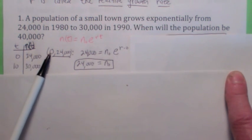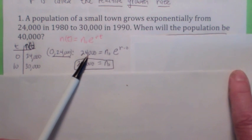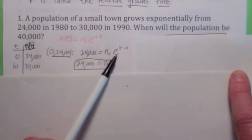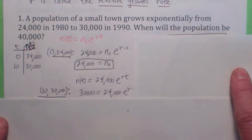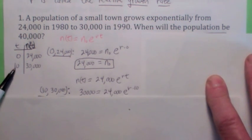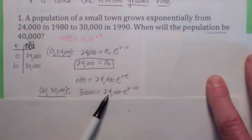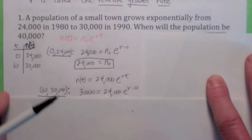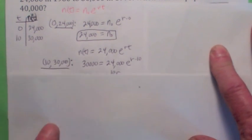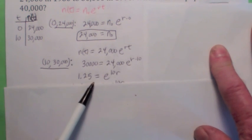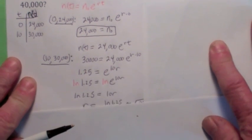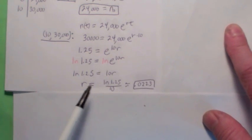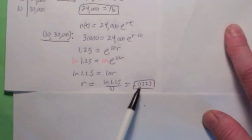If you plug in the point (0, 24000): 24,000 equals n-zero times e to the r times zero. Since e to the zero is one, the right side becomes n-zero, so n-zero equals 24,000. Now plug in the other point: at t equals 10 you have 30,000, giving 30,000 equals 24,000 times e to the 10r. To find r, first divide by 24,000, then take the natural log — the right side becomes just 10r. Divide by 10, so r equals approximately 0.0223. Notice r is positive, confirming exponential growth.